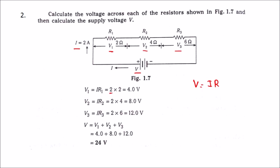Using V = IR: V1 = I × R1 = 2 amps × 2 ohms = 4 volts. V2 = I × R2 = 2 × 4 = 8 volts. V3 = I × R3 = 2 × 6 = 12 volts. The supply voltage is the sum of all three voltages: 4 + 8 + 12 = 24 volts.